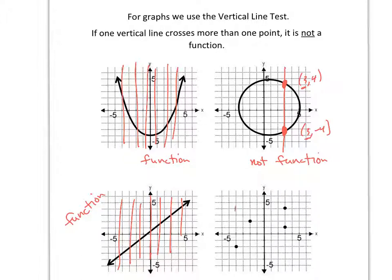This one, it's good here, it's good here, but look at that. I've got two points that are vertically on top of each other. That means they share the same x coordinate, so this one is not a function. All you need is one line that crosses more than once and it's not a function.